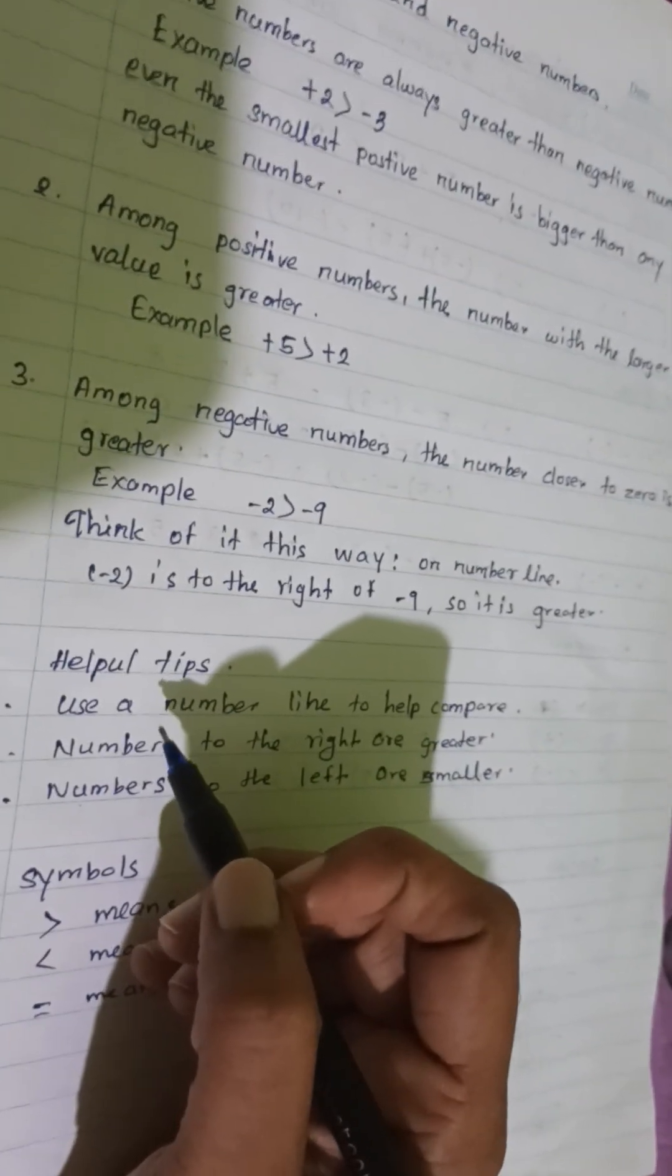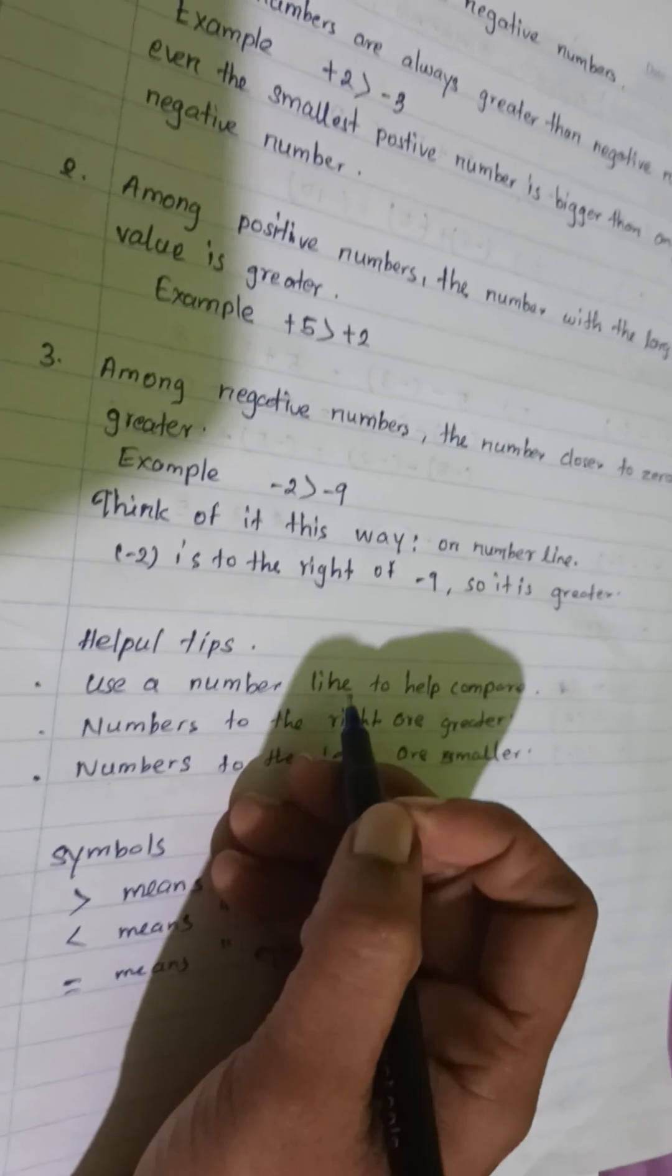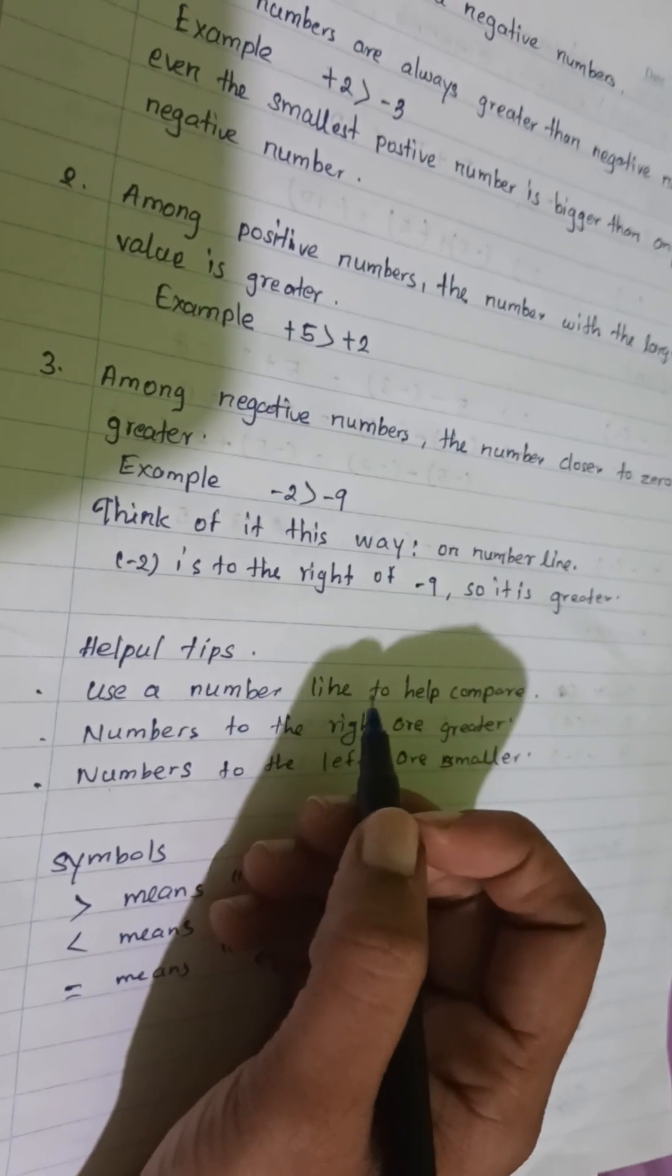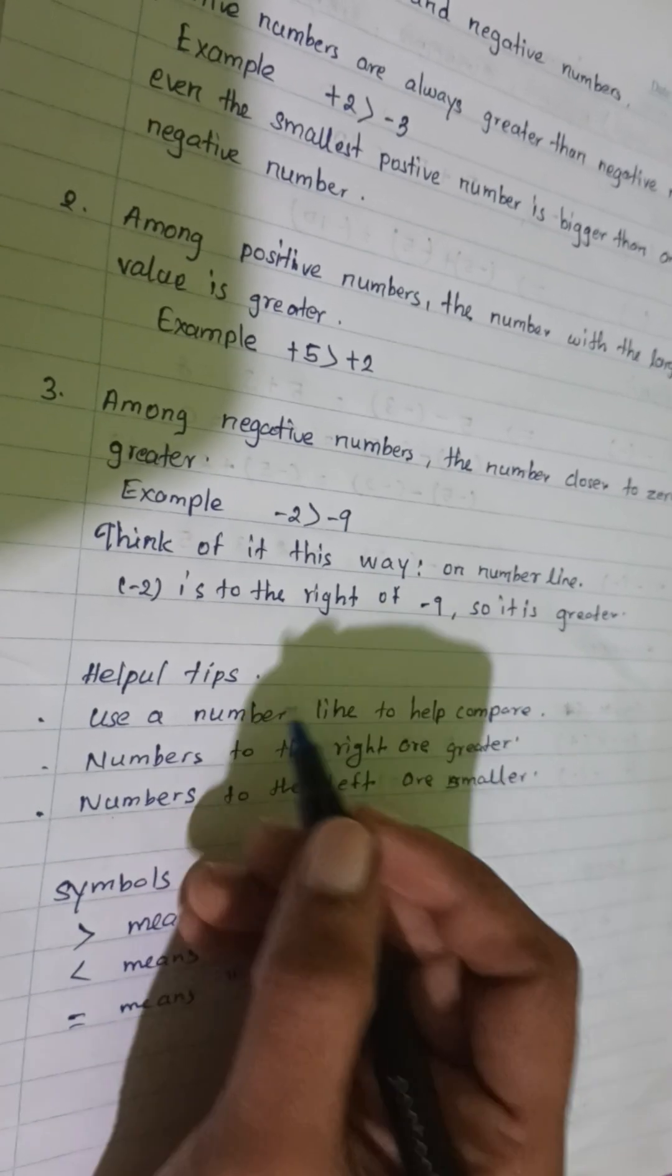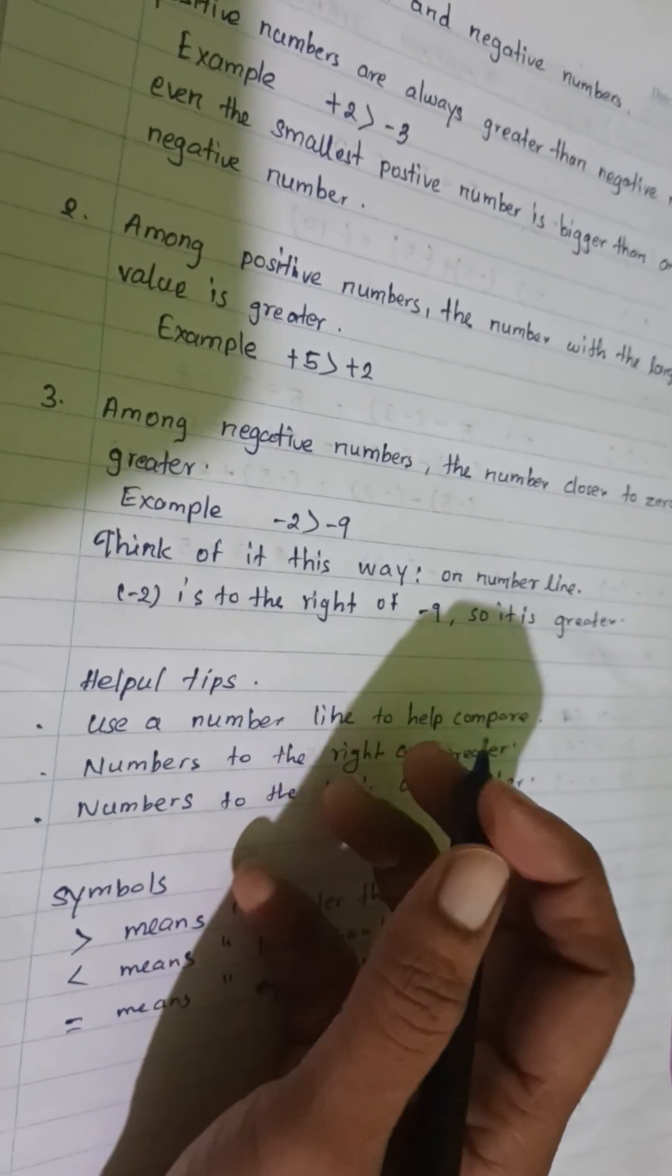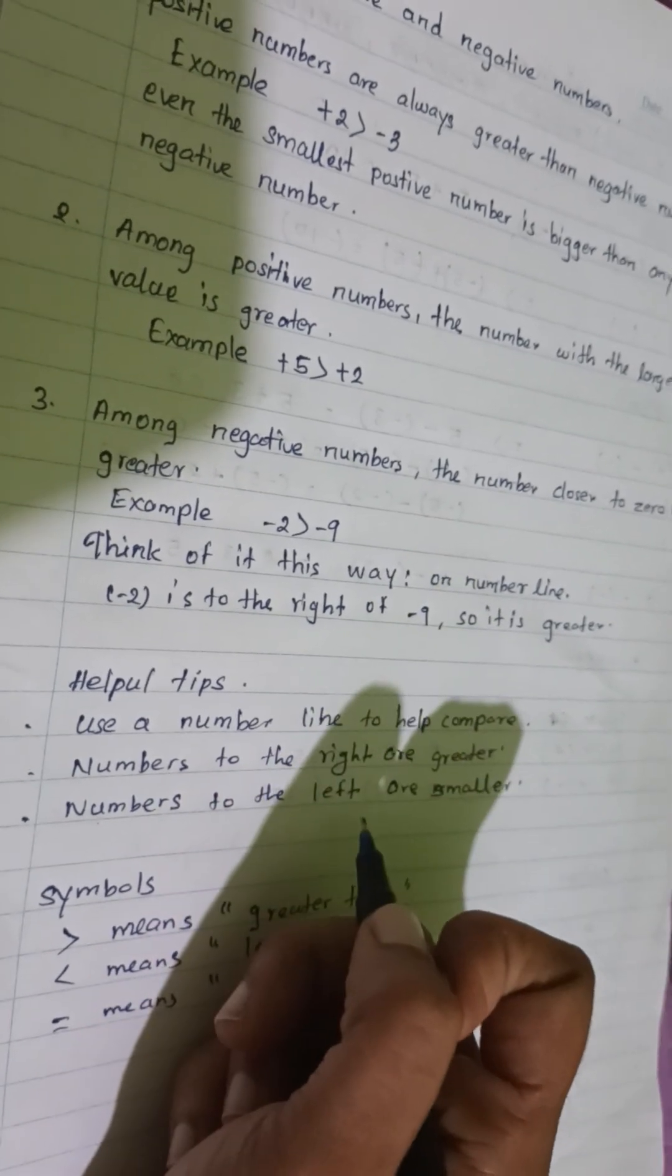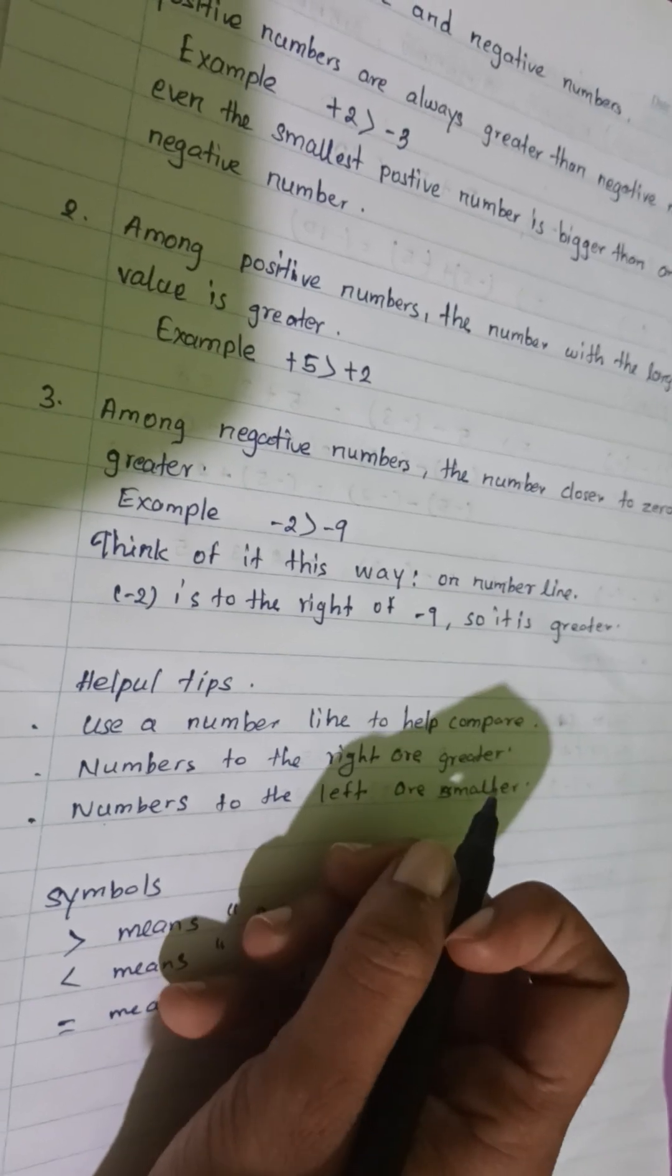Helpful tips: use a number line to compare positive and negative numbers. Numbers to the right are higher. Numbers to the left are smaller.